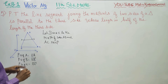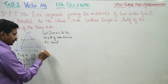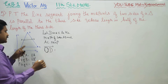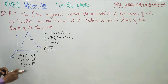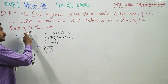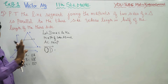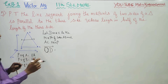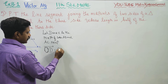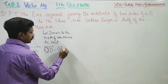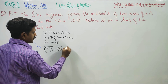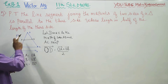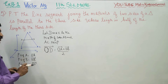I am going to find OD vector. What is OD vector? D is the midpoint. For a midpoint, the position vector is the sum of the two endpoint position vectors divided by 2. So OD vector equals OA vector plus OB vector by 2. This is my OD vector.